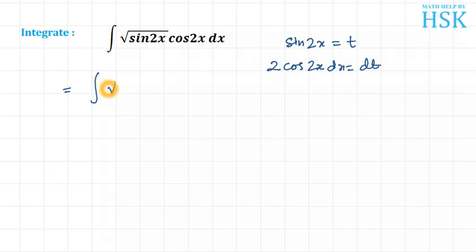...sin(2x) = t, so I get √t. And cos(2x)dx can be written as 1/2 dt, so this will equal 1/2 times dt.